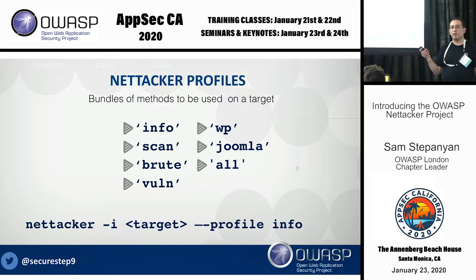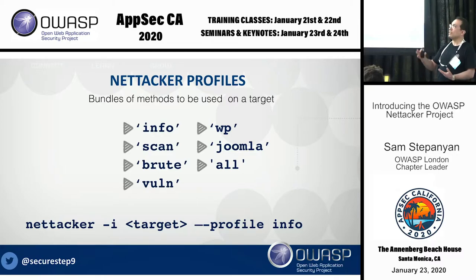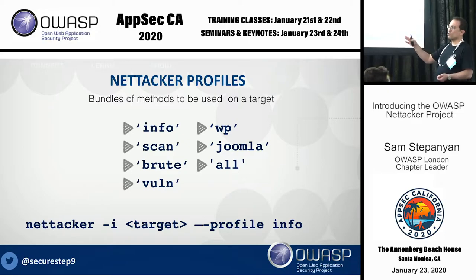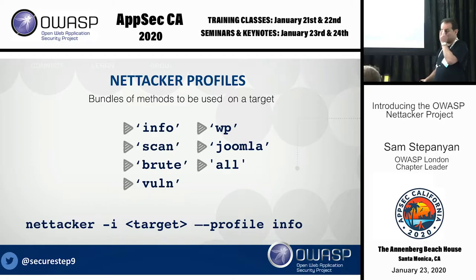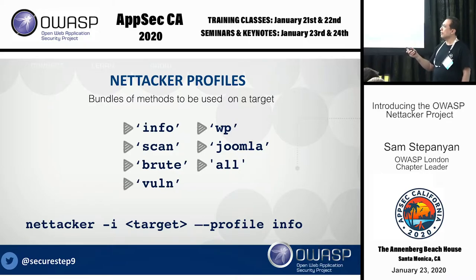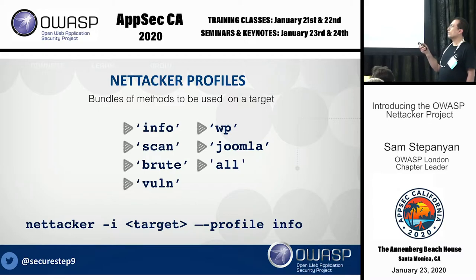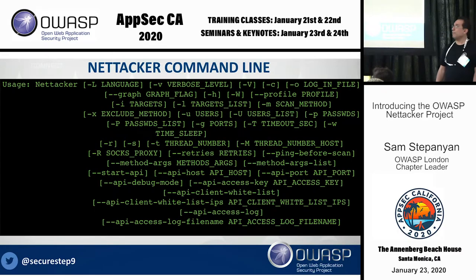NetAttacker comes with profiles that bundle modules. The default profiles include information gathering, all scan modules, all brute force modules, all vulnerability scanning modules. There's also a WordPress profile that bundles WordPress version scan, WordPress user enumeration, and WordPress theme and plugin enumeration together. There's also Joomla, or you can use 'all'. When using profiles, the syntax changes: you provide dash-i with your target, then use dash-dash-profile followed by the profile name, for example 'information_gathering'. On the command line there are also options including dash-U and dash-P to provide username and password lists for brute forcing.